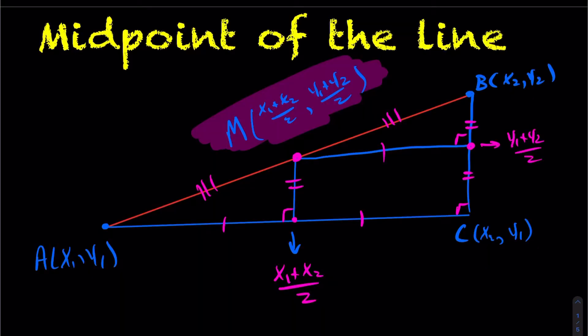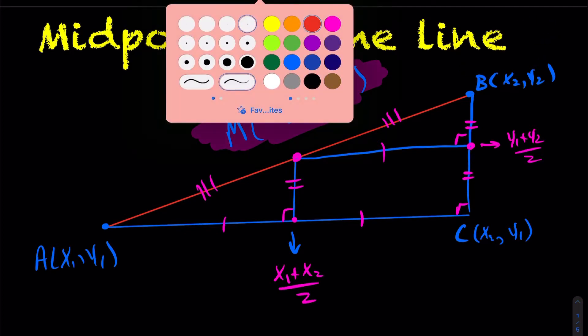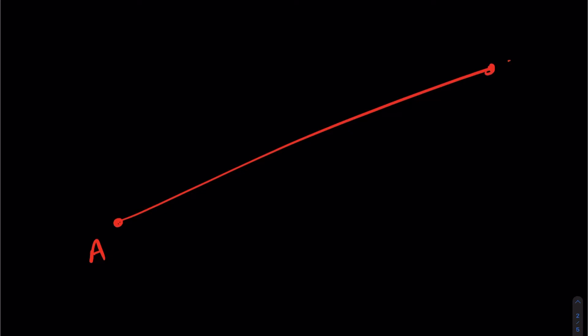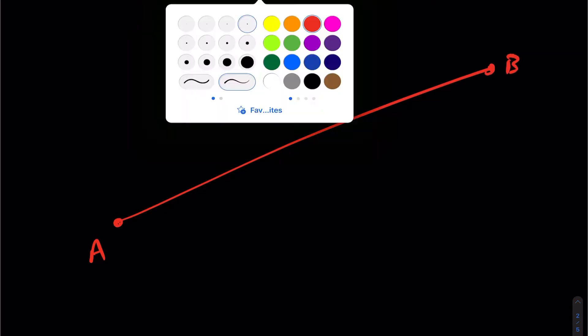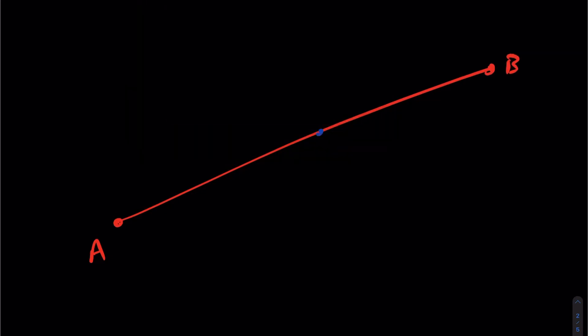We're going to take a look at the midpoint of a line segment. If you missed the proof, it's in the other video — I'll link it above if you want to check out why this is true. Essentially, for a given line segment with point A and point B, the midpoint is the point equidistant to both A and B.